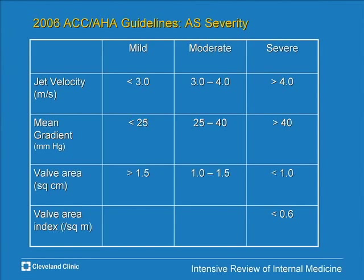The recent guidelines for defining severity of aortic stenosis are mostly based on echocardiography. Severe AS is defined by jet velocity greater than 4 m/s, a mean gradient greater than 40 mmHg, and a valve area less than 1 square centimeter — it used to be 0.8, now it's less than 1. Indexed to body surface area, severe AS is less than 0.6 cm² per m². These are the numbers to be familiar with.